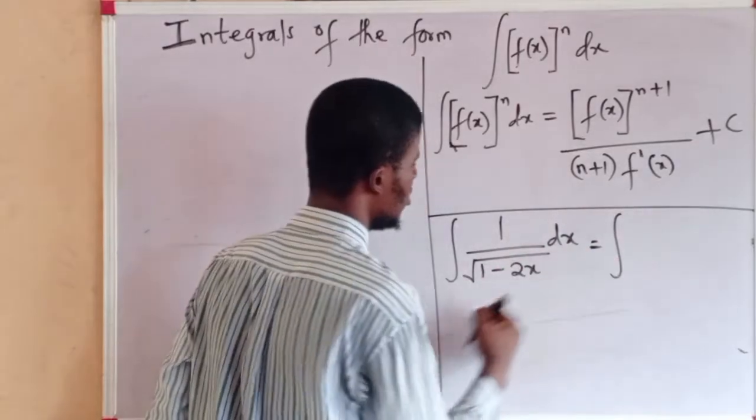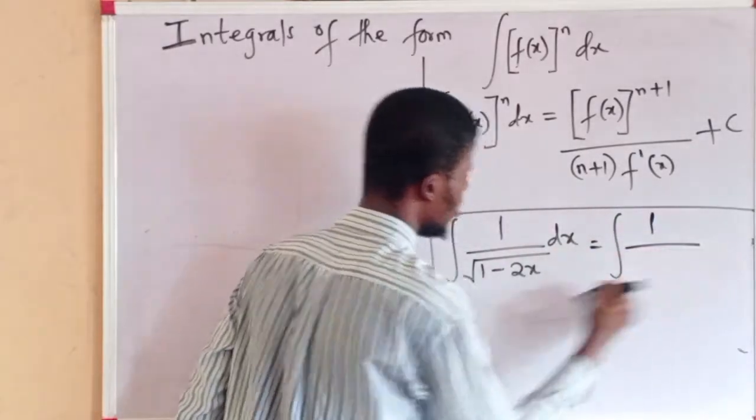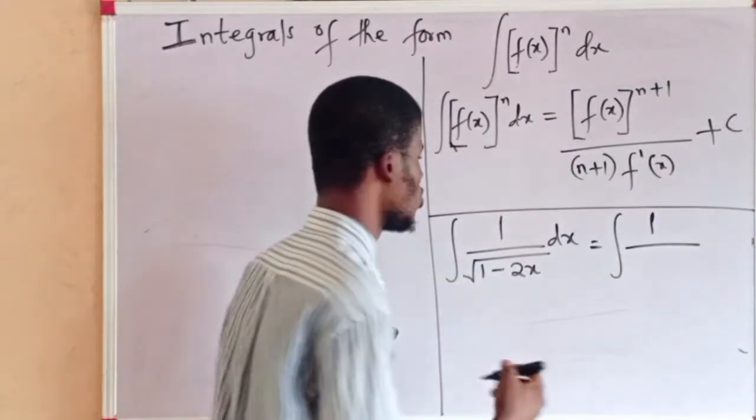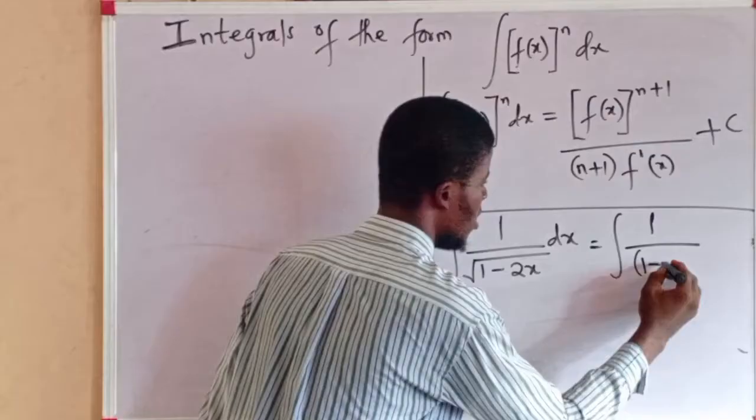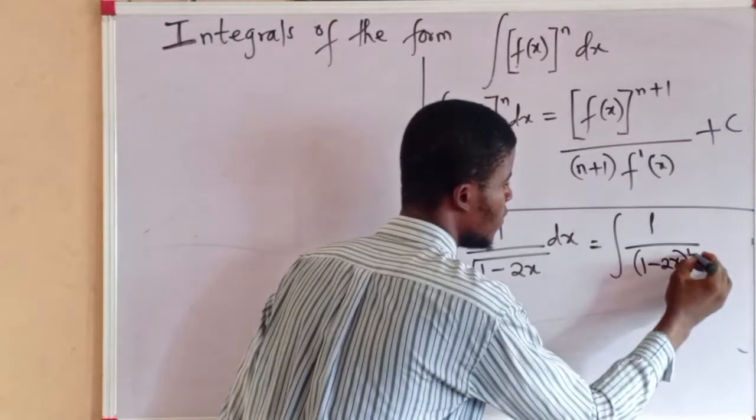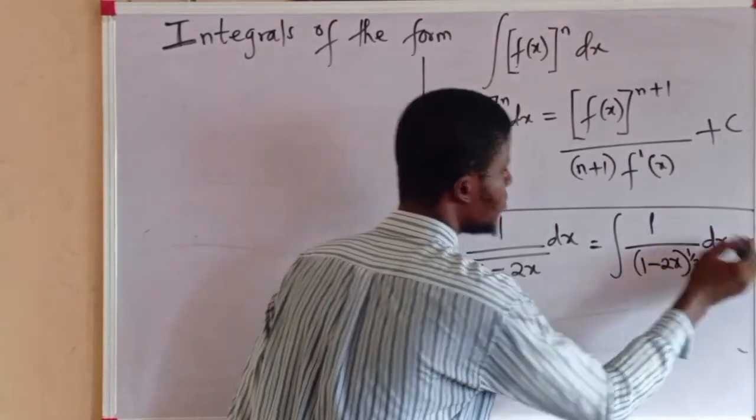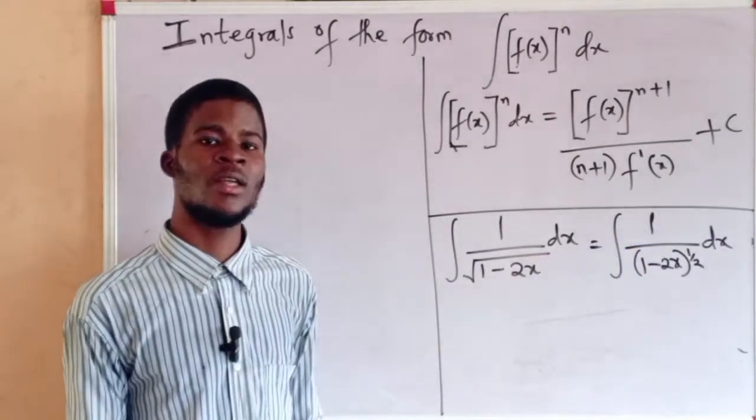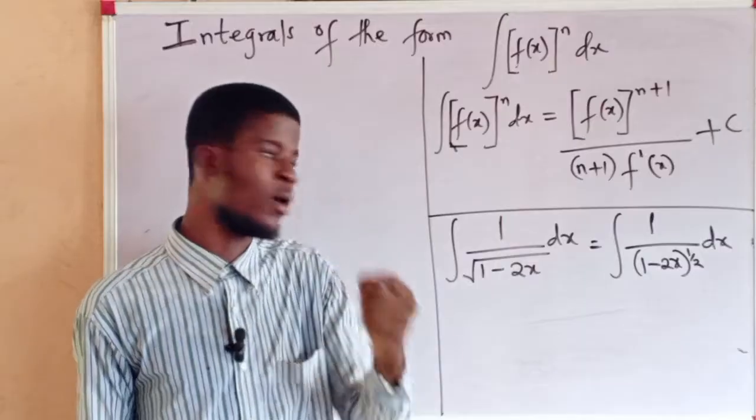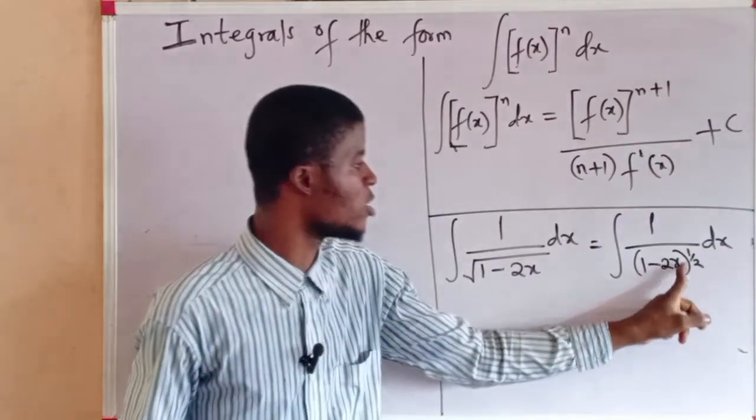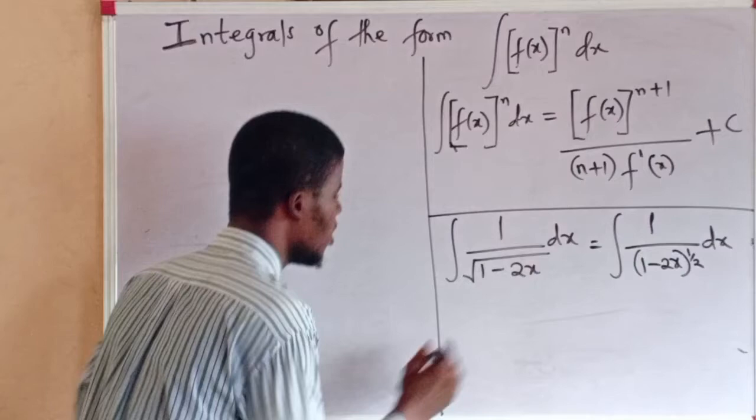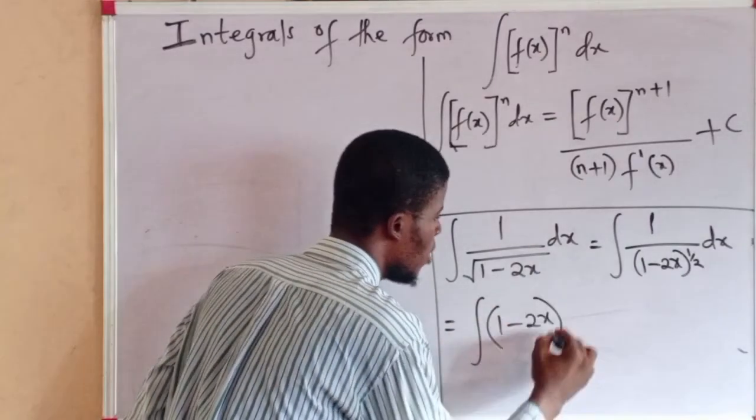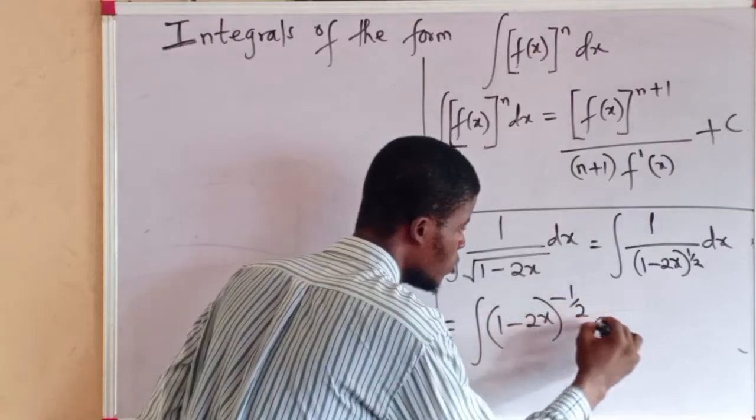We have the integral of 1 upon a square root is equivalent to the power of 1 over 2. So we have 1 minus 2x to the power of 1 half dx. If I take the inverse of this, it's going to produce a negative power. That is, 1 minus 2x will now have a negative power. It is equivalent to the integral of 1 minus 2x to the power of minus 1 over 2 dx.